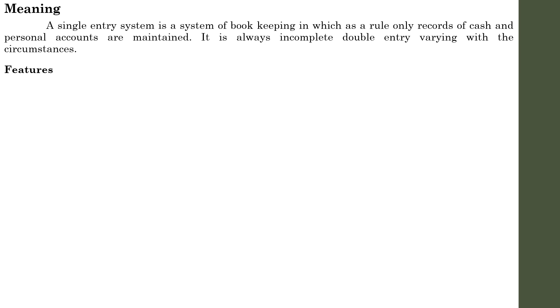Next: Features of a Single Entry System. Let us discuss in detail the salient features of Single Entry System. First feature: Maintenance of Personal Accounts. Under Single Entry System, only personal accounts are maintained, and the nominal and real accounts are completely ignored. They will record only personal accounts — accounts related to the name of a person. It may be debtors, creditors, amounts outstanding, or amounts paid in advance. They won't record any nominal accounts. With regard to cash accounts, there is some differentiation.